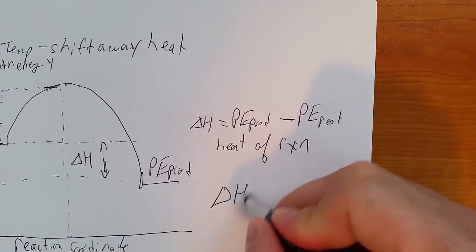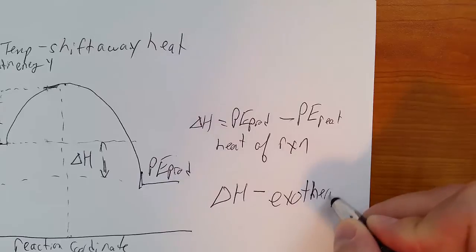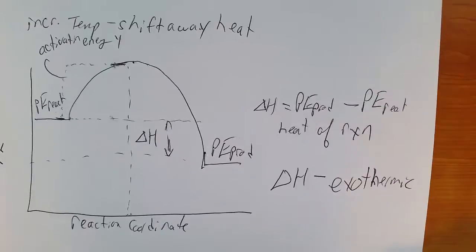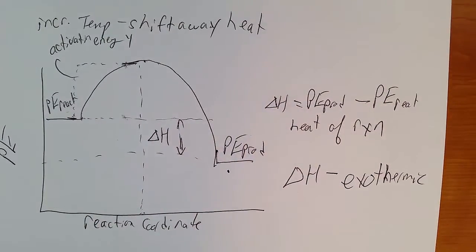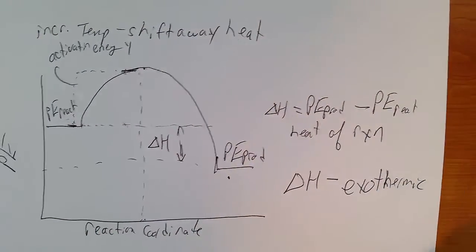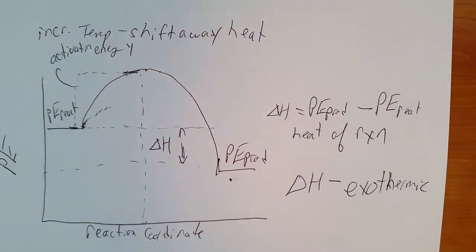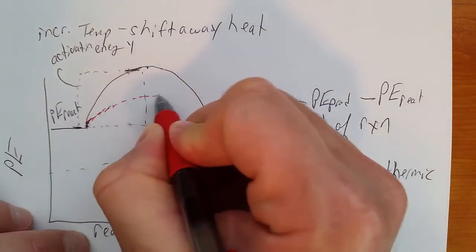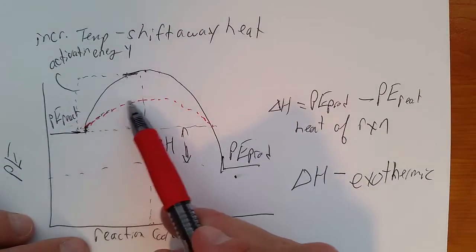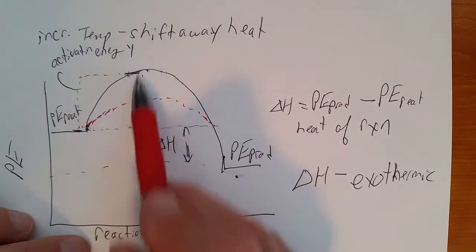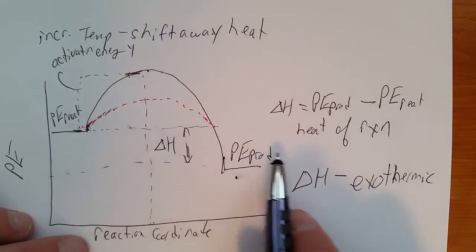When delta H is negative, the reaction is exothermic. This is an exothermic reaction where the products are lower in energy than the reactants. If we do this reaction in the presence of a catalyst, it would lower the activation energy by providing an alternate pathway for the reaction. The picture shows an alternate pathway with a lower activation energy. In this case it's an exothermic reaction.